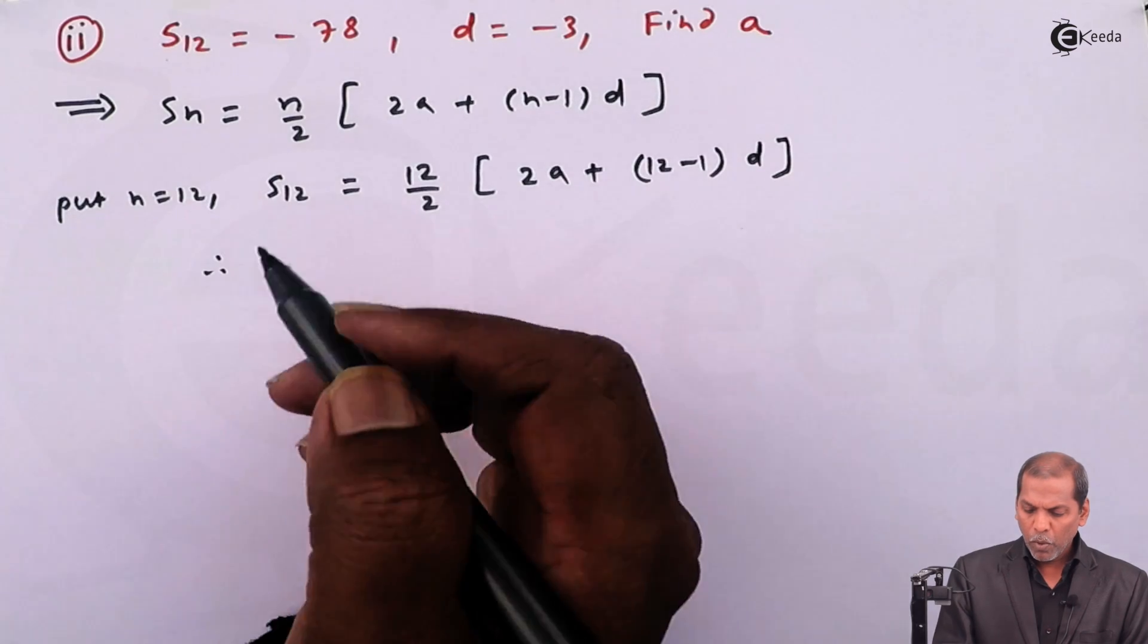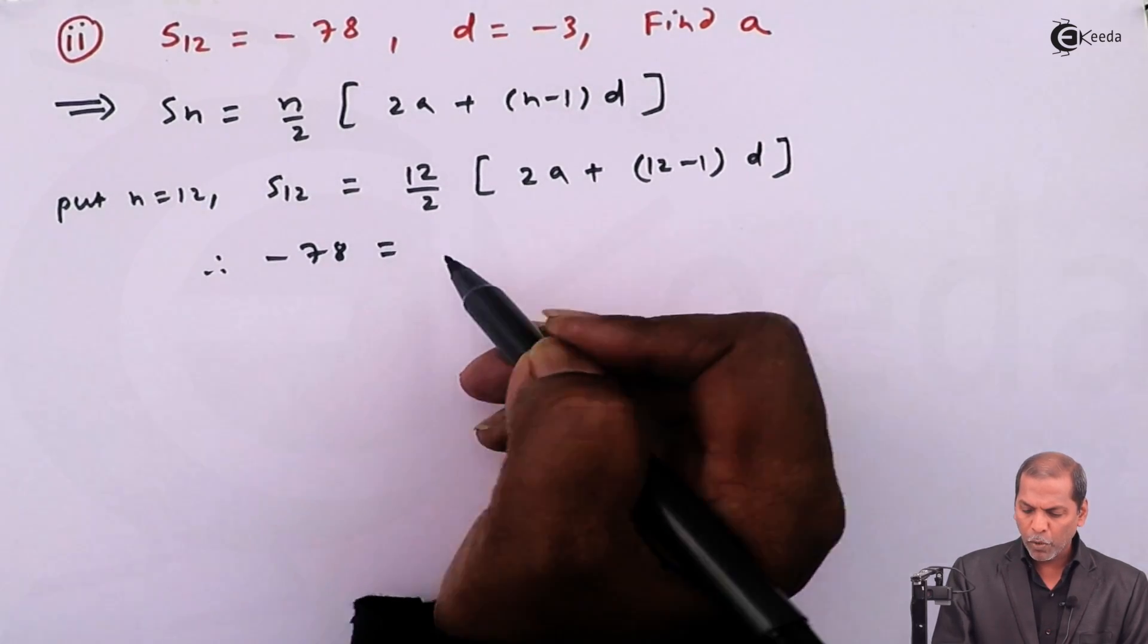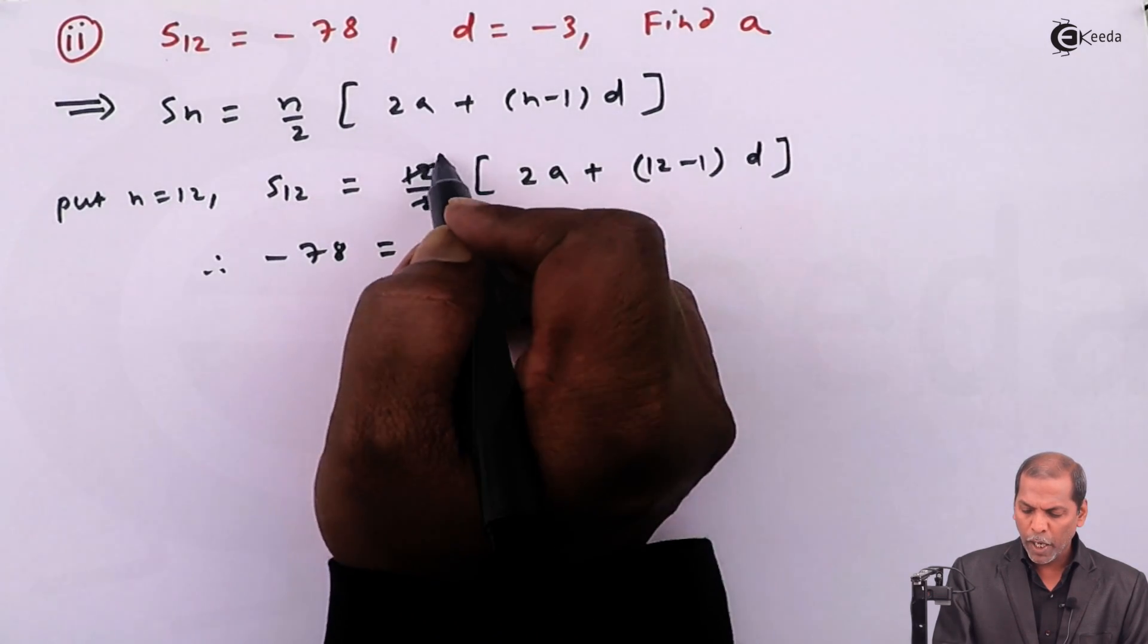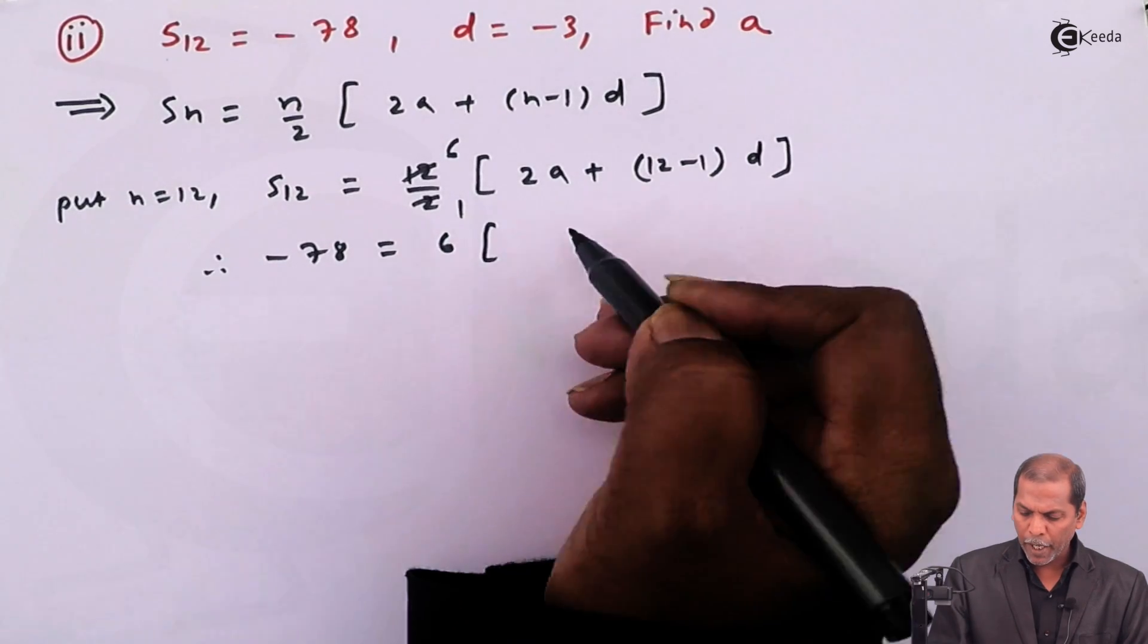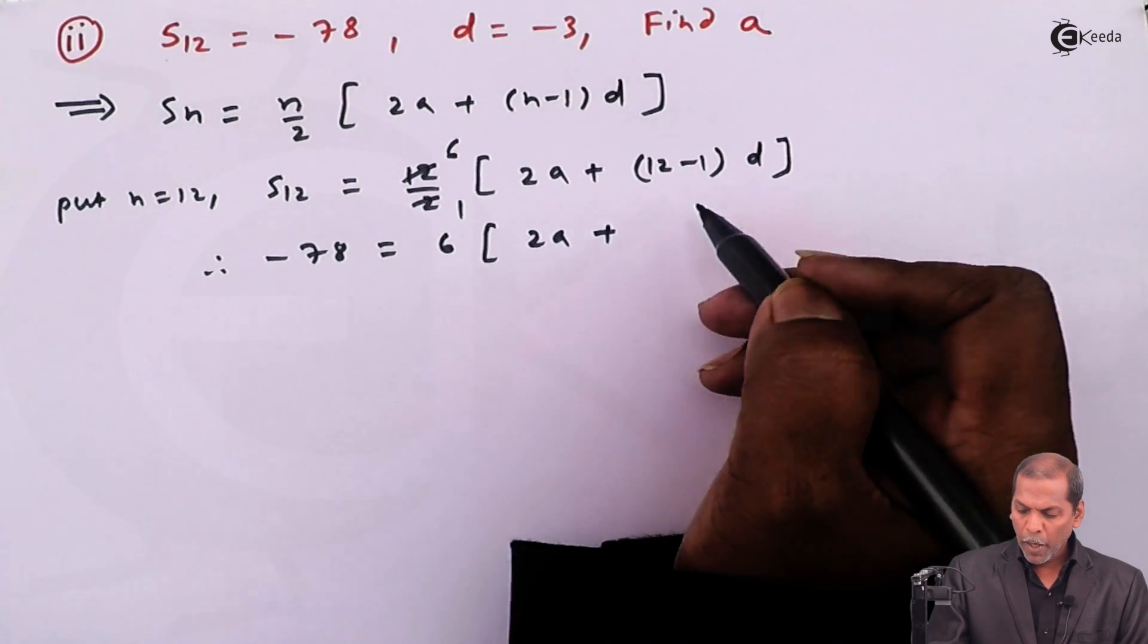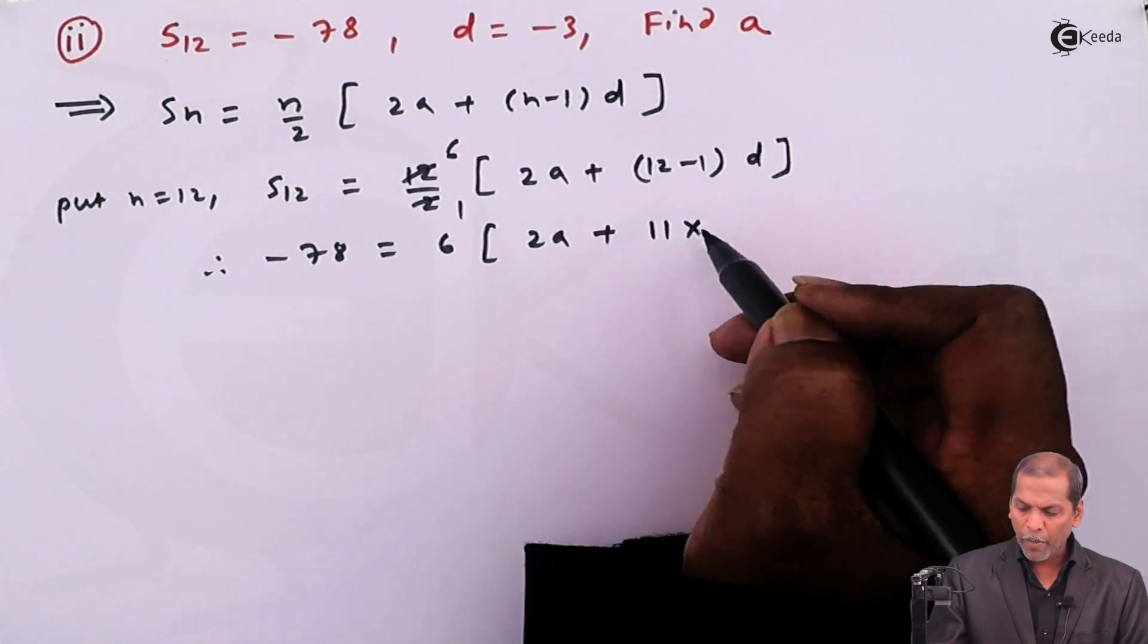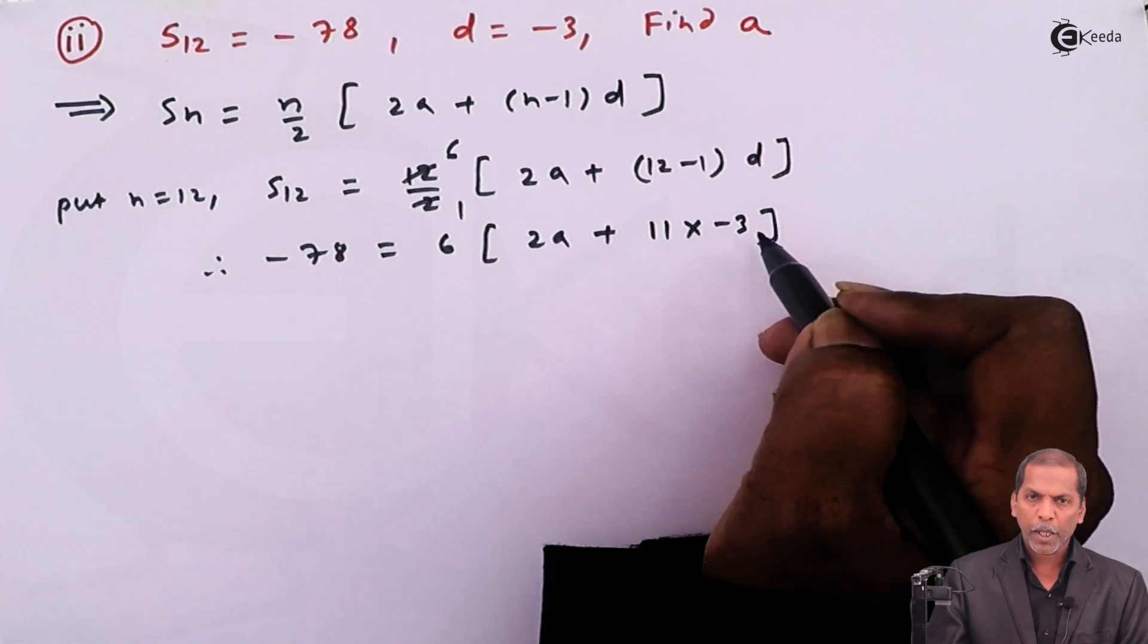Therefore, minus 78 equals, here we go for cancellation, 2 into 6 are 12. So 6 in bracket 2a we write as it is. Then 12 minus 1 we get 11 multiply by d. The value of d here given as minus 3.